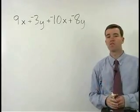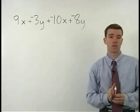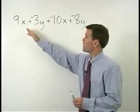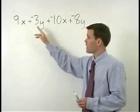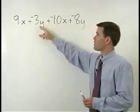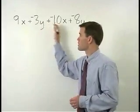To simplify, we can only combine what are called our like terms. And in this problem, we have a pair of like terms in our x terms and we have a pair of like terms in our y terms. So let's start by combining our x terms.